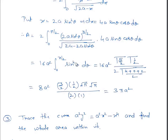Here m = 4 and n = 0 (no power of cosθ). Applying the formula: 16a² · Γ(5/2) · Γ(1/2) / [2 · Γ(6/2)] = 8a² · Γ(5/2) · Γ(1/2) / Γ(3). Now Γ(5/2) = (3/2)(1/2)√π, Γ(1/2) = √π, and Γ(3) = 2! = 2. Simplifying, the entire area comes out to be 3πa².